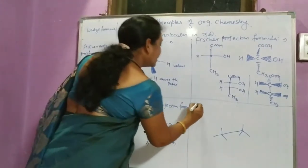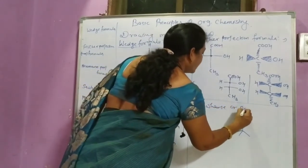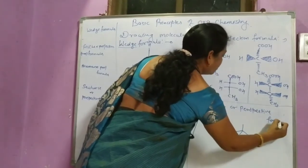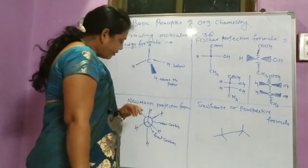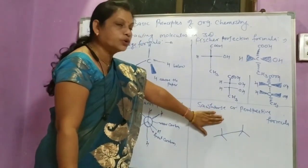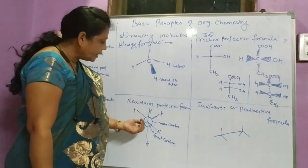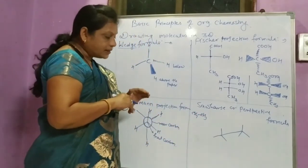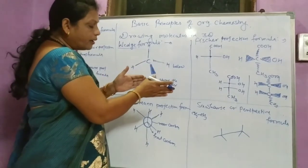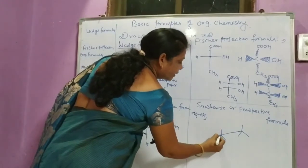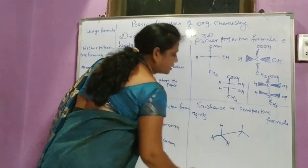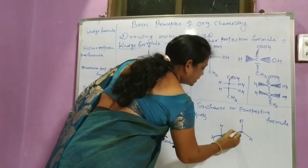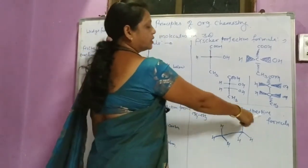The next one is called the sawhorse formula, also called the perspective projection formula or simply perspective formula. The sawhorse is also used to represent carbon-carbon single bond molecules. For ethane — CH3 single bond CH3 — if it is viewed from the side, then we see the front carbon atom with H, H, H and the rear carbon atom, giving us the sawhorse or perspective formula structure.